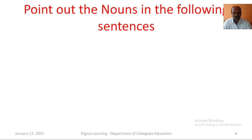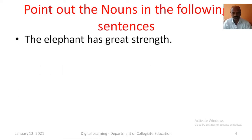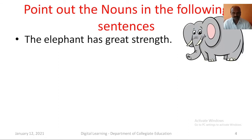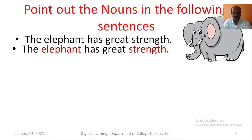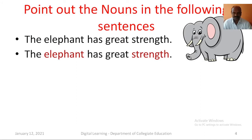I will show some sentences here. Please identify nouns in these sentences. The elephant has great strength. In this sentence, elephant and strength are nouns. Elephant is a common noun, and strength is an abstract noun.